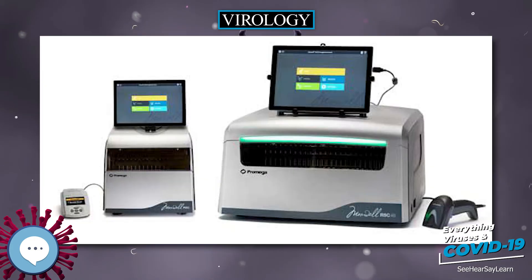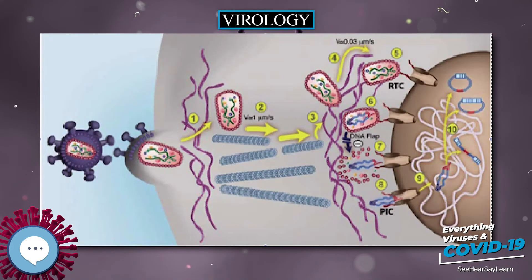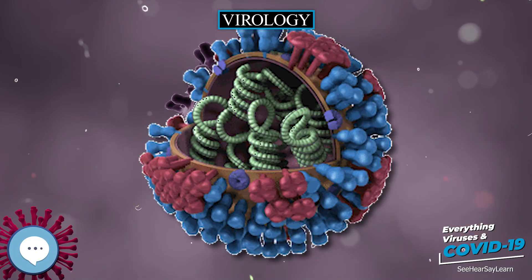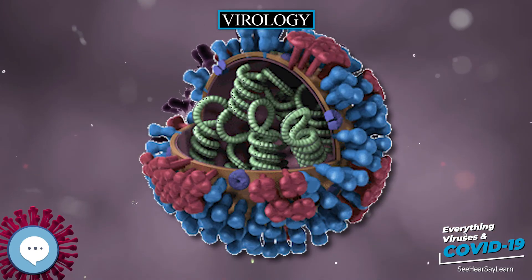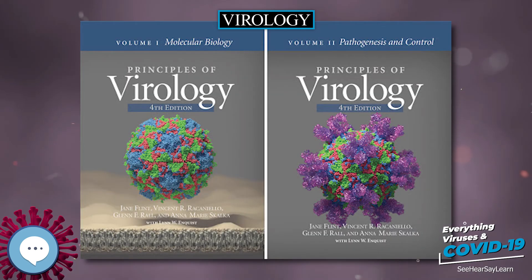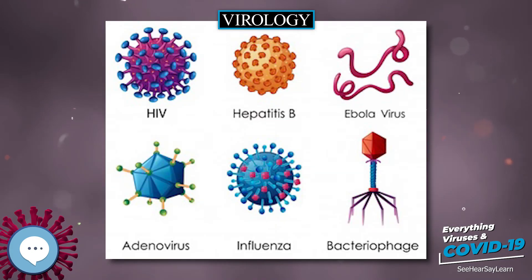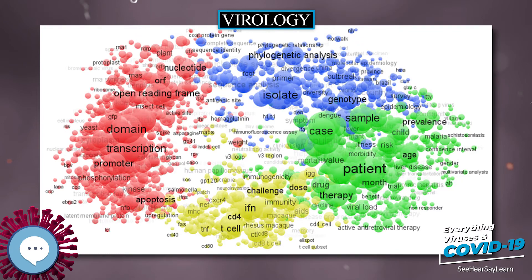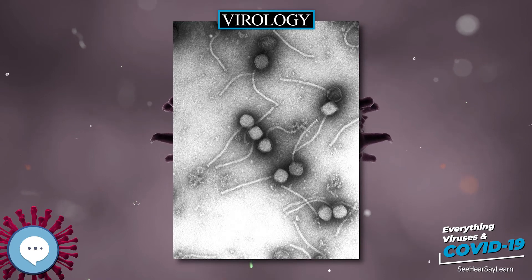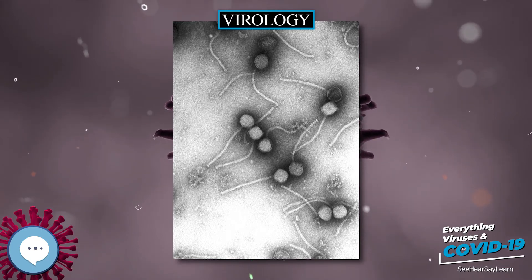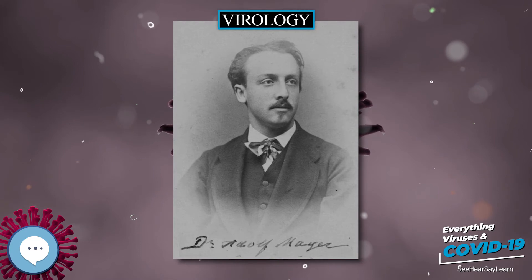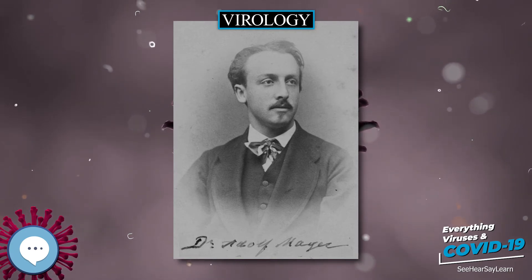The nature of viruses however was not clear to these researchers. In 1892, the Russian biologist Dmitry Ivanovsky used a Chamberland filter to try to isolate the bacteria that cause tobacco mosaic disease. His experiments showed that crushed leaf extracts from infected tobacco plants remained infectious after filtration. Ivanovsky reported a minuscule infectious agent or toxin, capable of passing the filter, possibly being produced by a bacterium.